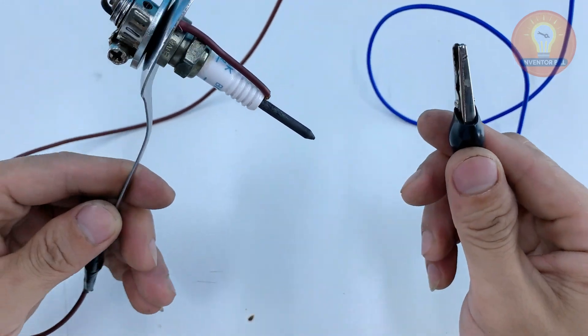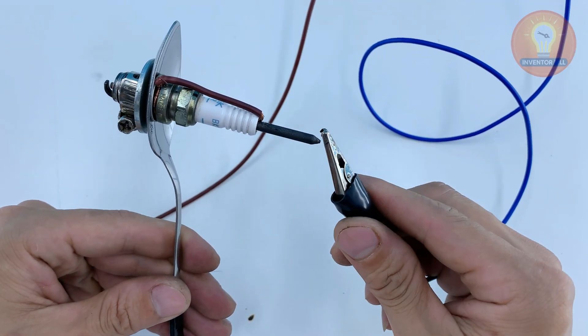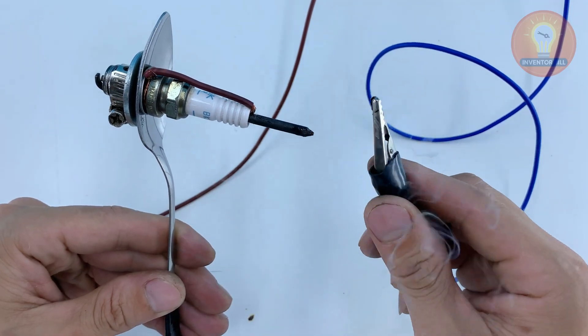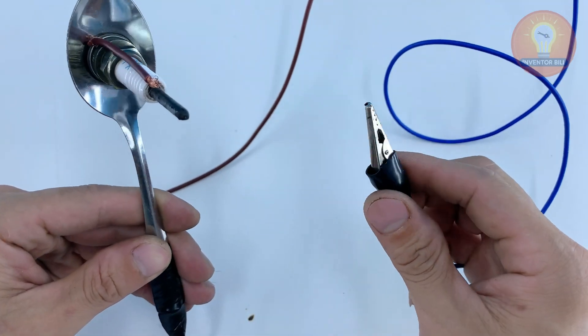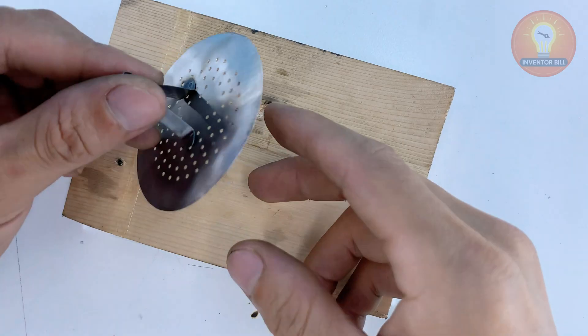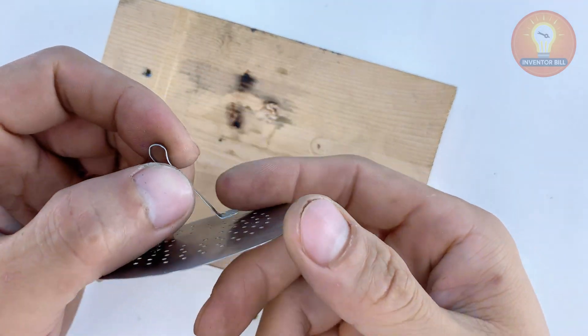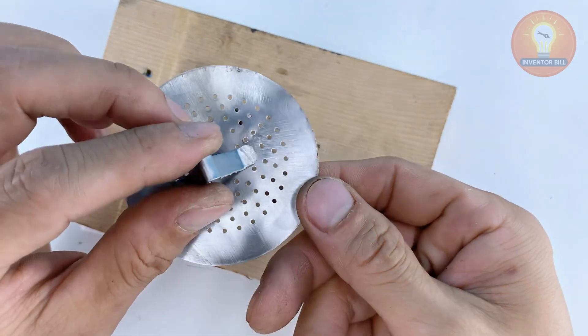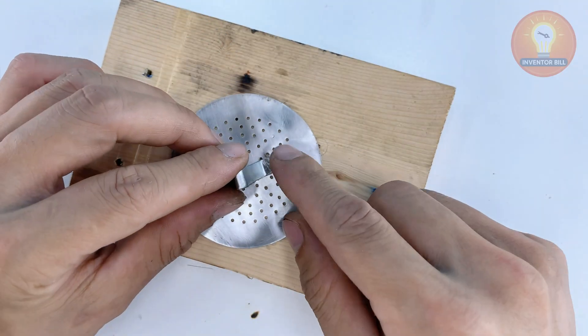Now touch the sharpened carbon tip to the free clip on that blue wire. The moment they meet, you'll see a bright arc spark showing the system is delivering heat strong enough for welding. It's a quick way to confirm the tool is ready before you begin any real repair work.